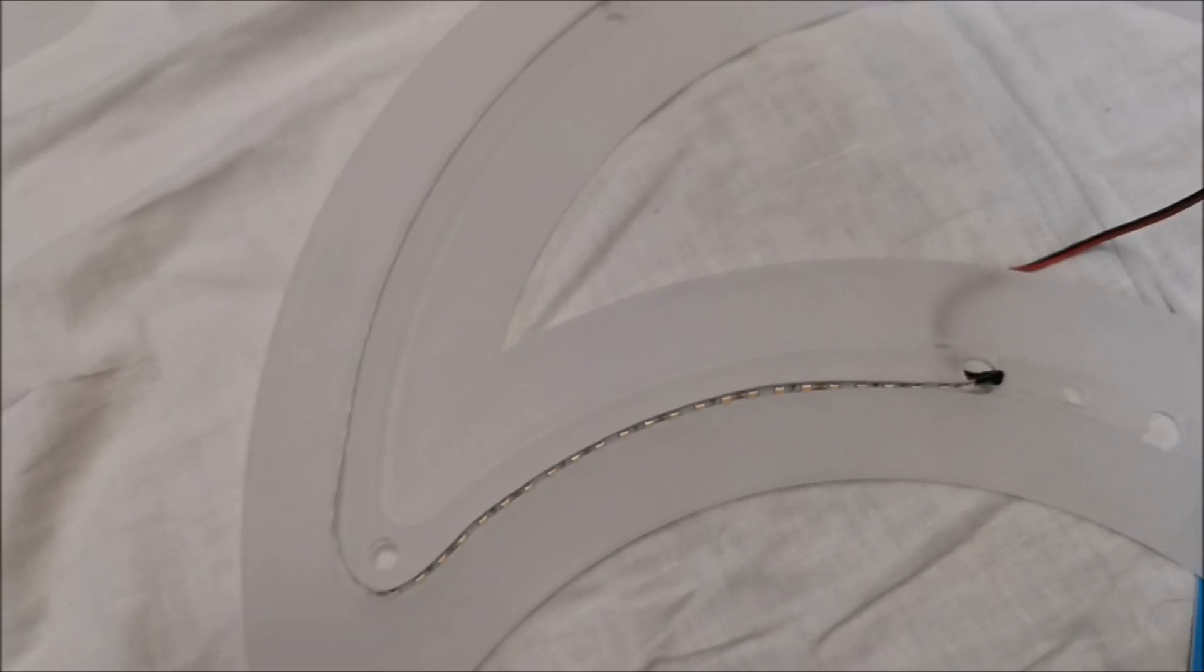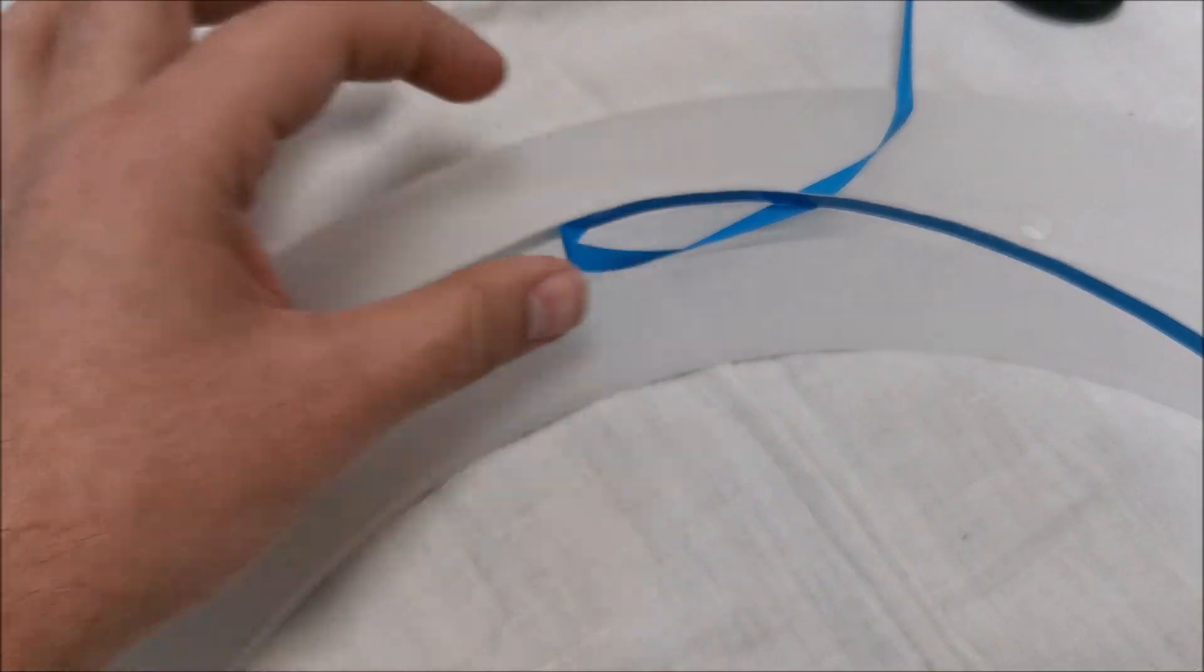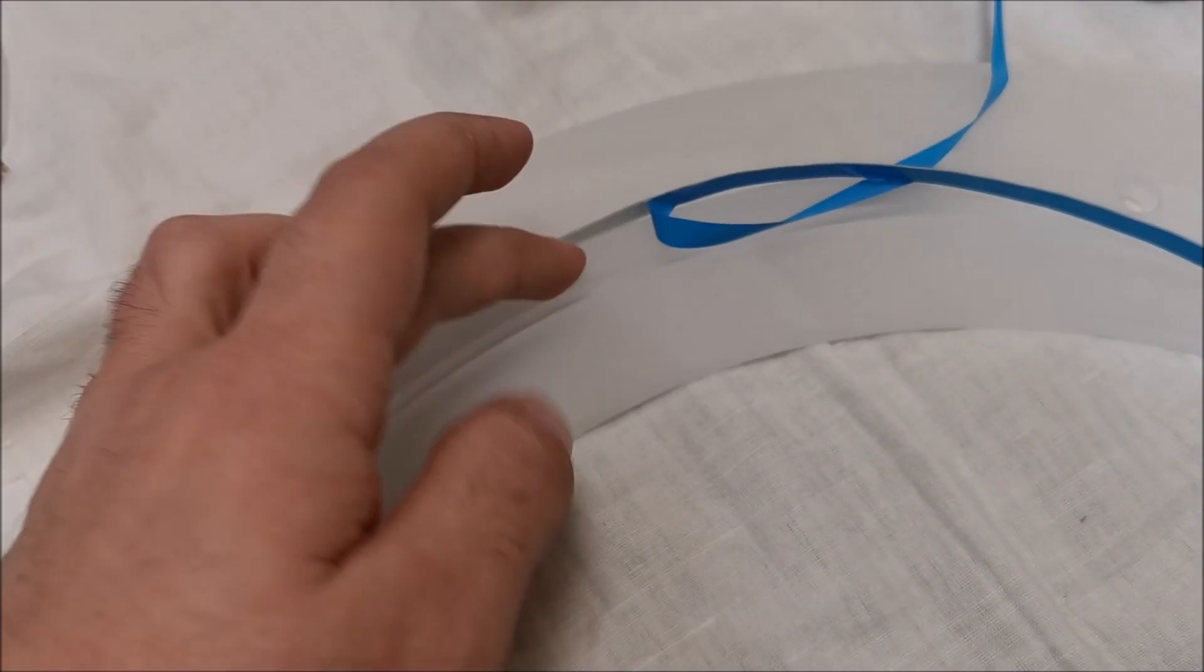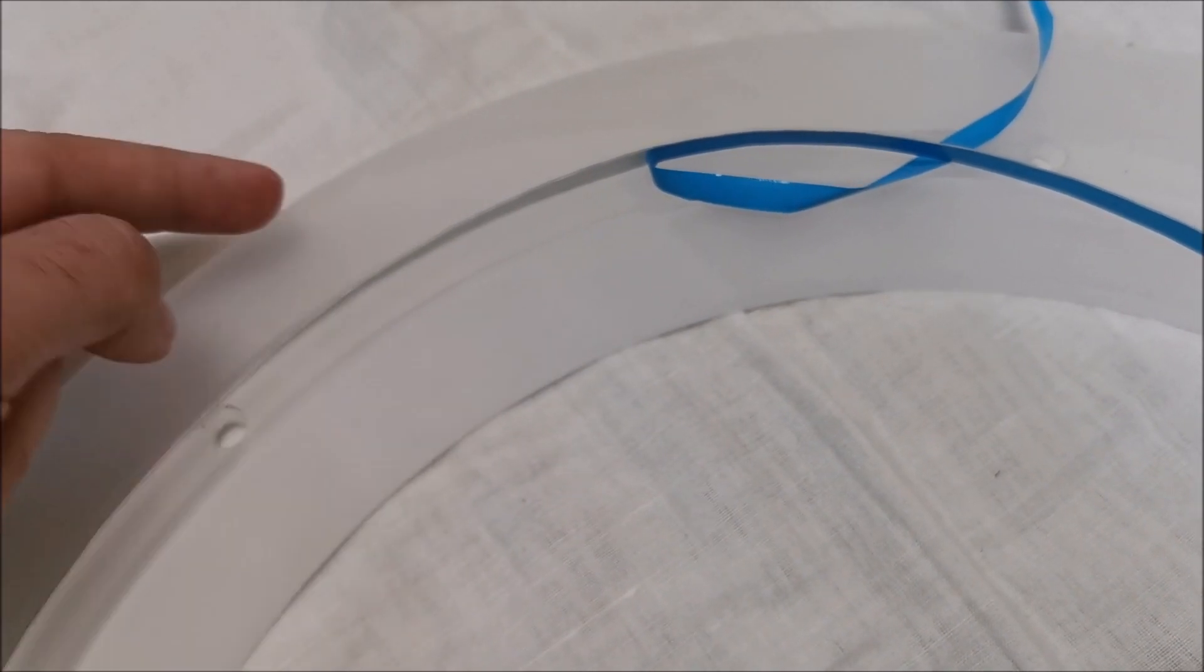Now putting the LED strip in place. Don't peel off the protection from all of it from the start. It will be a pain, it will glue itself to anything. Just remove tiny bits as you push it in the channel and glue it.